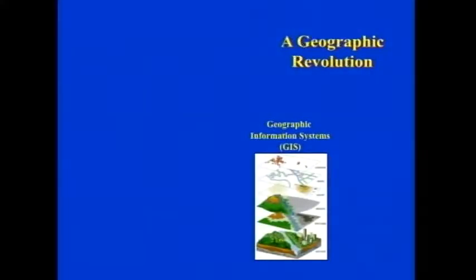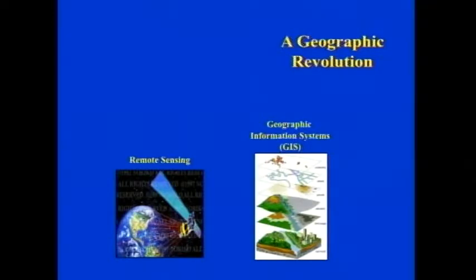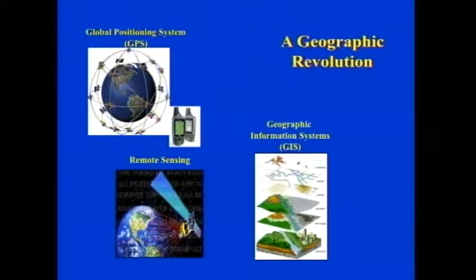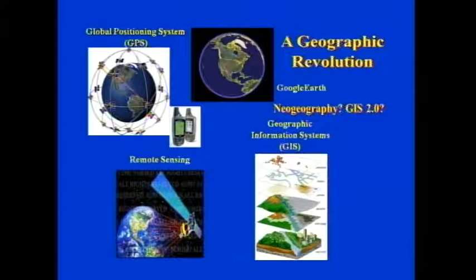We're undergoing a geographic revolution right now in this country. It started with geographic information systems in the 1960s, digital satellite remote sensing in the 1970s, the global positioning system in the 1980s and 90s — finally going public in the 90s — and then Google Earth in the 2000s. There's a new struggle to come up with a term to represent all of this in the new operating environment, where you have Google Earth, volunteer geographic information, crowdsourcing, social networking. Some people want to call it neogeography. Some people call it GIS 2.0.